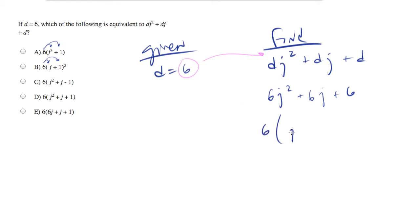So let's take the 6 out, and we'll end up with 6 times j squared plus j plus 1. So do we have a match there? That would be answer choice d.